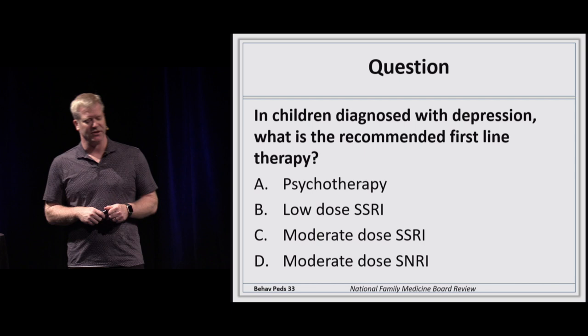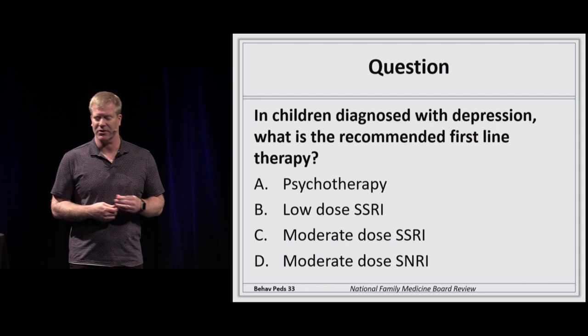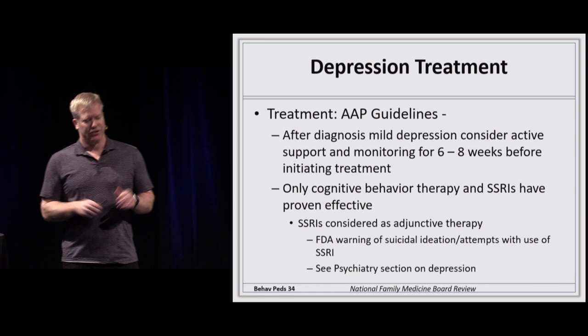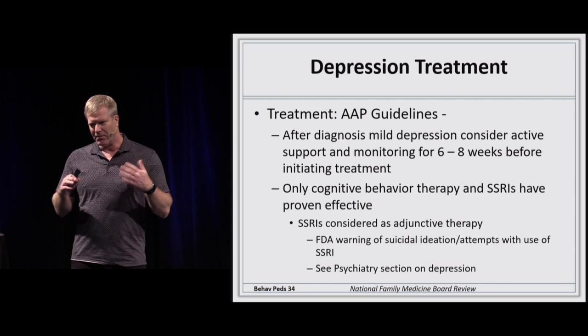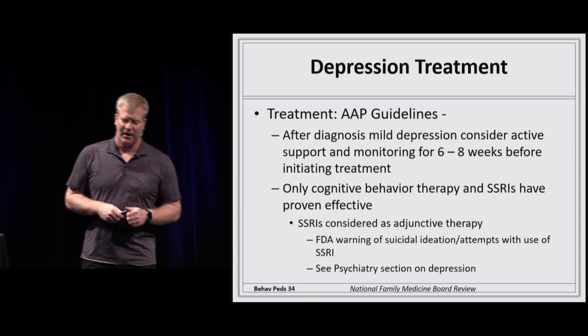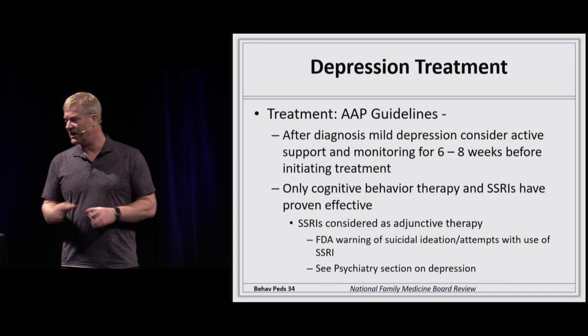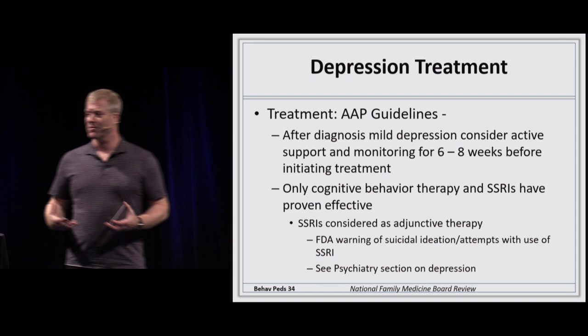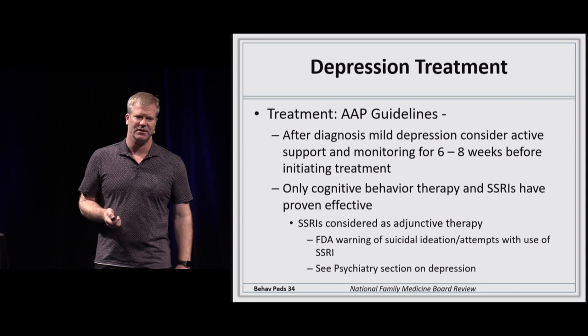The first-line treatment for childhood and adolescent depression is psychotherapy. The AAP endorses psychotherapy for mild to moderate depression — cognitive behavioral therapy is commonly used. Don't reach for the prescription pad first. There are black box warnings for SSRIs in teenagers because giving an SSRI to a depressed adolescent can provide the motivation to actually carry out a suicide attempt.